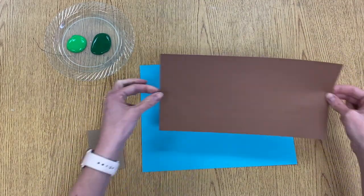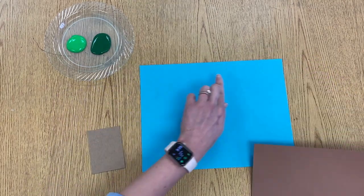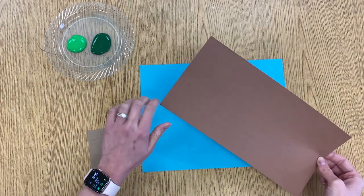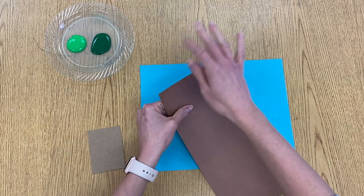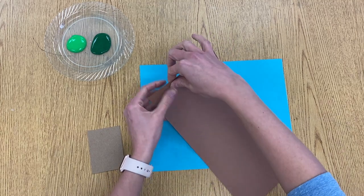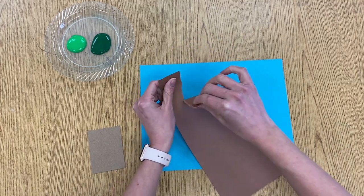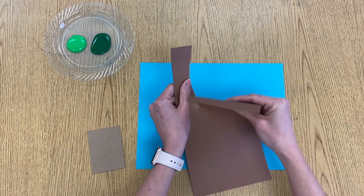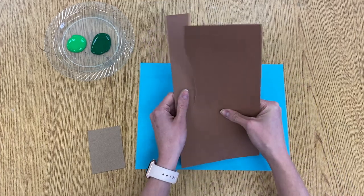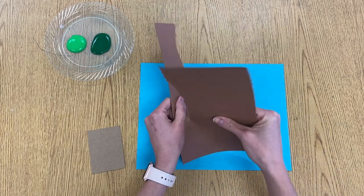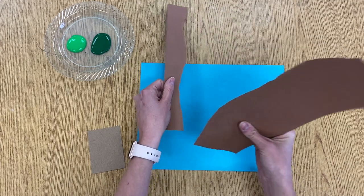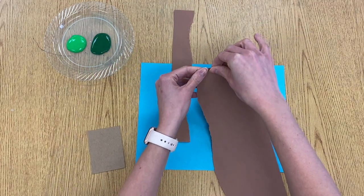The first thing we're going to do is rip our brown paper to create some branches across our blue background. So to do this, you can just kind of rip some organic lines. Remember, we have talked a lot about organic shapes and organic lines. Those are basically lines that are not perfect.